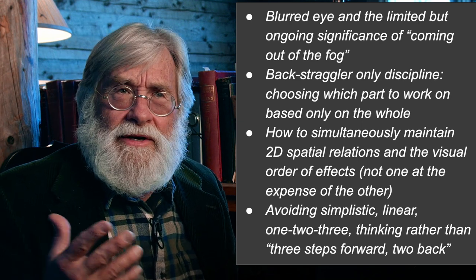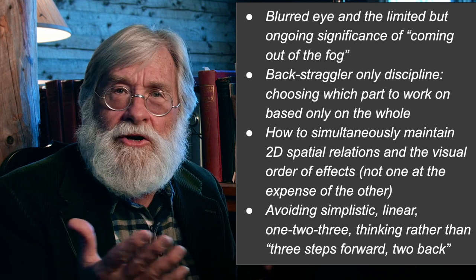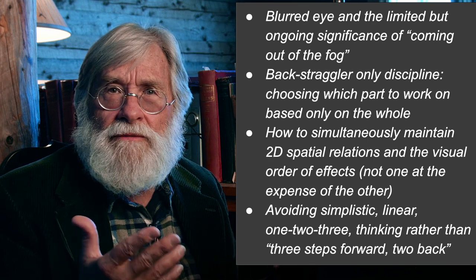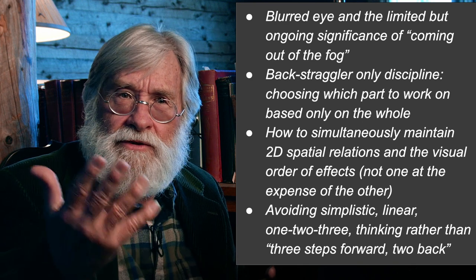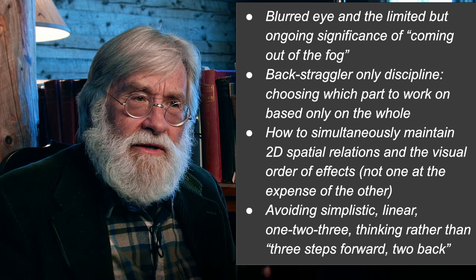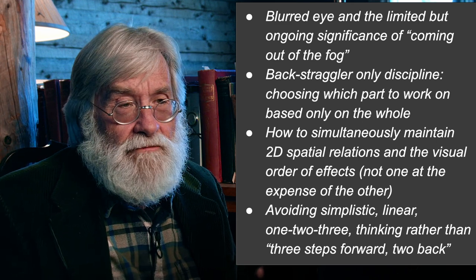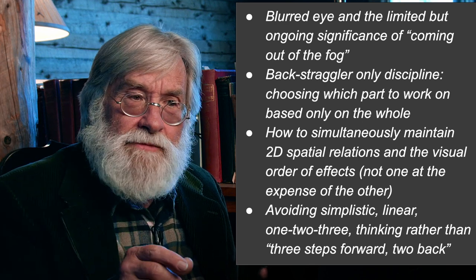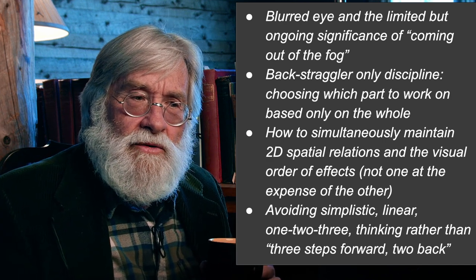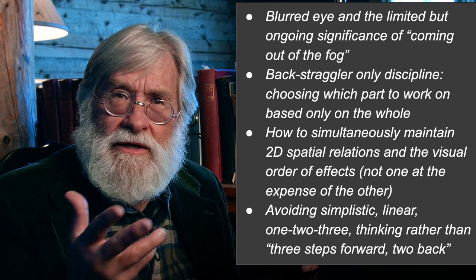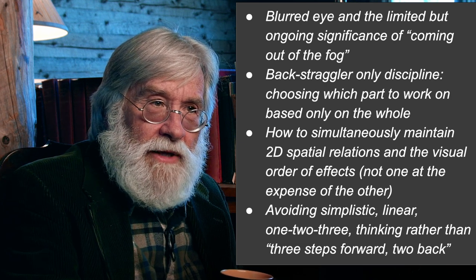There is a time when you really have everything in unity but the painting isn't developed. At that point you can reach forward. When I say back straggler only, you can reach forward to the center of interest and say, 'I'm going to evolve you a little more, start bringing on the next level of data.' If I go out of harmony with nature, I want the strongest elements leading. Also key: how to simultaneously maintain 2D spatial relationships plus the visual order of effects — avoiding simplistic linear 1-2-3 thinking, rather than putting two notes down and then consolidating and correcting all the previous ones.